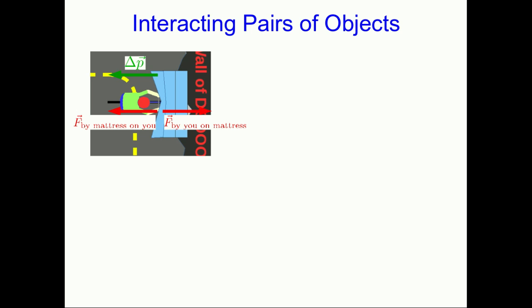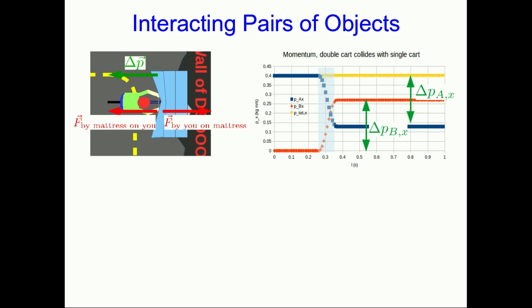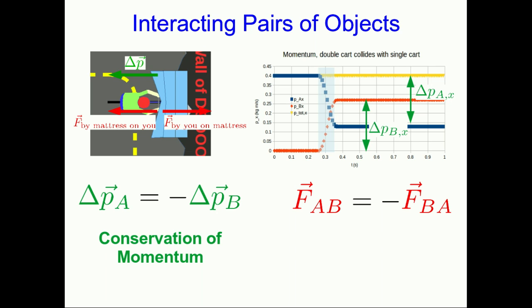We've seen that forces arise from interactions between pairs of objects, and so as a result all forces exist in pairs which we call interaction pairs. Because momentum is conserved, the change of momentum of one object is always of the same magnitude and in the opposite direction as the change of momentum of the other object. We know that the two forces in an interaction pair always act in different directions and have the same magnitude. And what's more, you need to remember that those two forces act on different objects because the agent and target of these forces get reversed between one force and the other in the interaction pair.